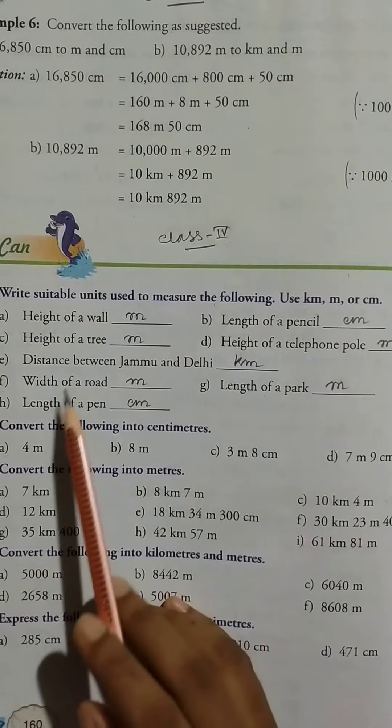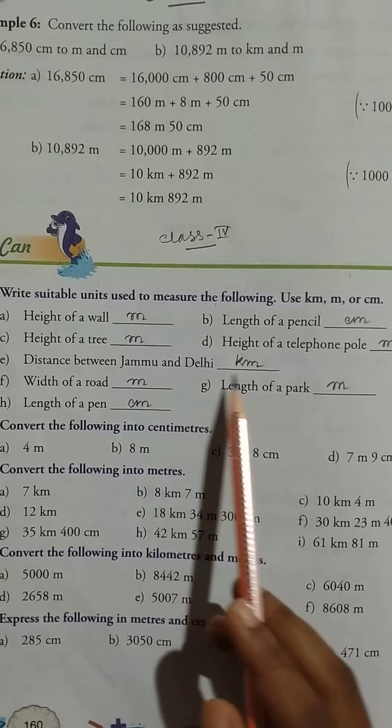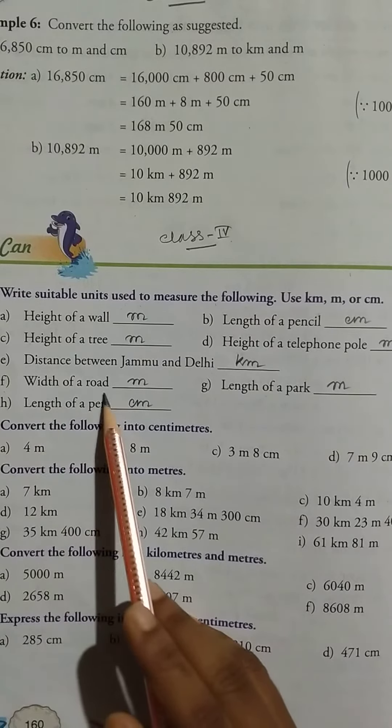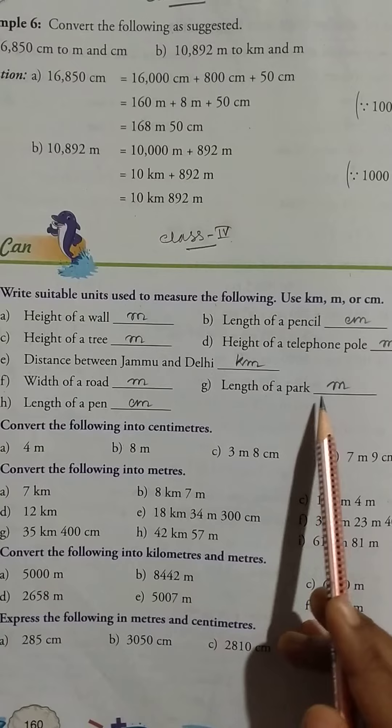Height of a telephone pole: meter. Distance between Jammu and Delhi: kilometer. Width of a road: meter. Length of a park: kilometer or meter.